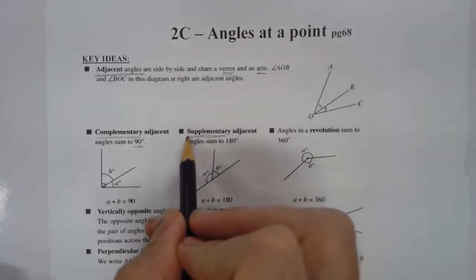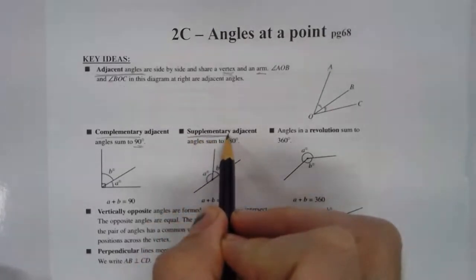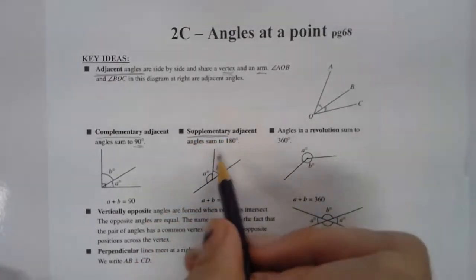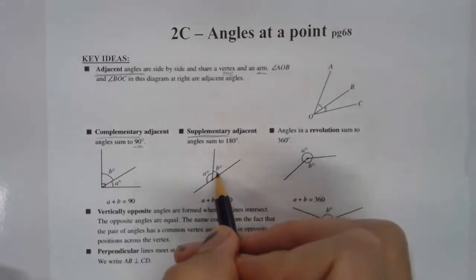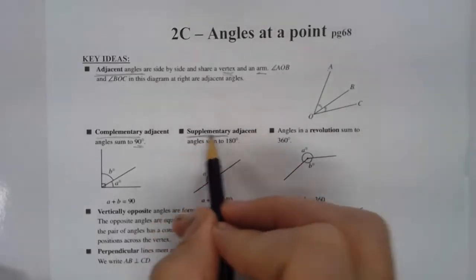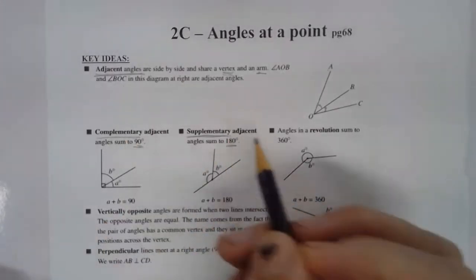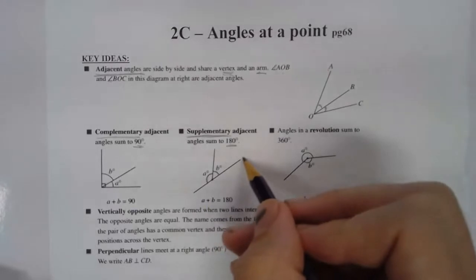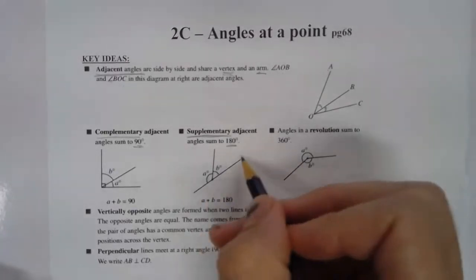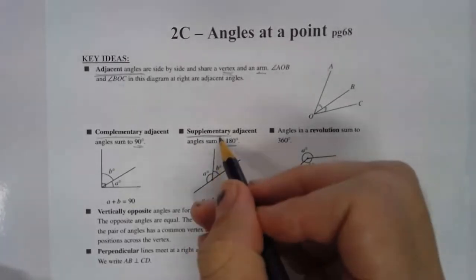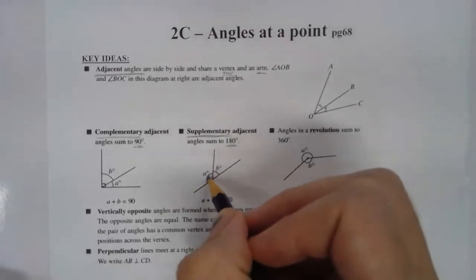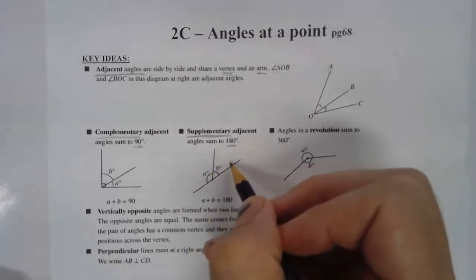Now similarly, but a little bit bigger than 90 degrees, is the supplementary adjacent angle. These angles are adjacent because they're next to each other. And they're supplementary because instead of 90, which was complementary, they add up to 180 degrees, or a straight line. So if you have a straight line and a point and an arm off there, these two angles, A and B, will add up to 180 degrees.